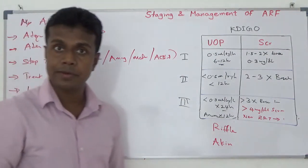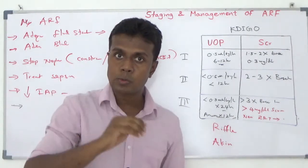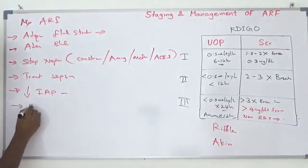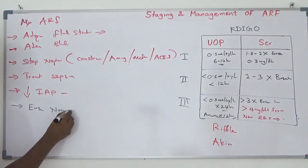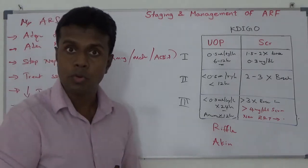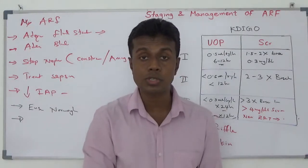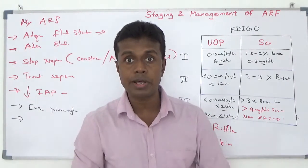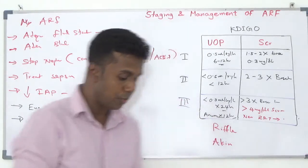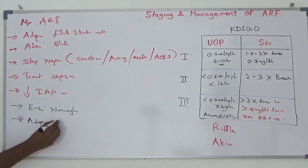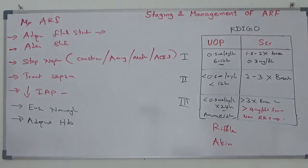Ensure normoglycemia. Also ensure adequate hemoglobin level — because hemoglobin carries oxygen to your nephrons. The medullary part of the nephron is the most vulnerable to ischemia, so you have to maintain adequate hemoglobin level.